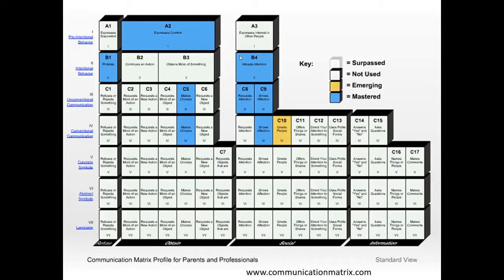Emerging skills — shown in yellow — are where I invest most of my time as a speech-language pathologist. In graduate school, a professor talked about the zone of proximal development, using the analogy of a horse that starts to trot then run. We teach the skill closest to where the child or adult is performing. The goal is to move those yellow boxes over to blue. The Communication Matrix lets you clearly see strengths, areas of need, and emerging skills.